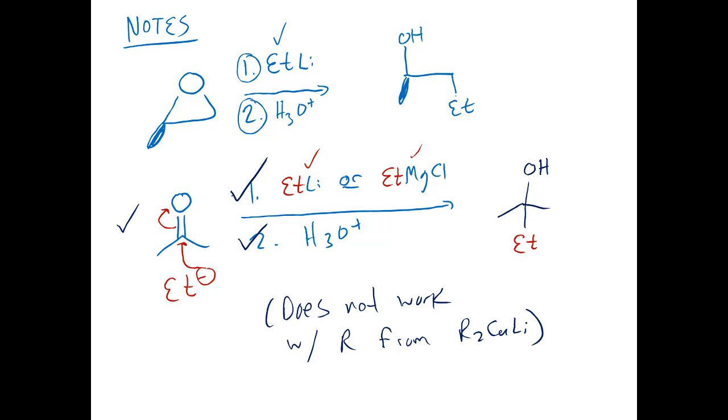I had mentioned that Gilman reagents are good at replacing leaving groups and are less reactive than organolithium or Grignard reagents. So these type of reactions do not work if you try to use an R group from a Gilman reagent.